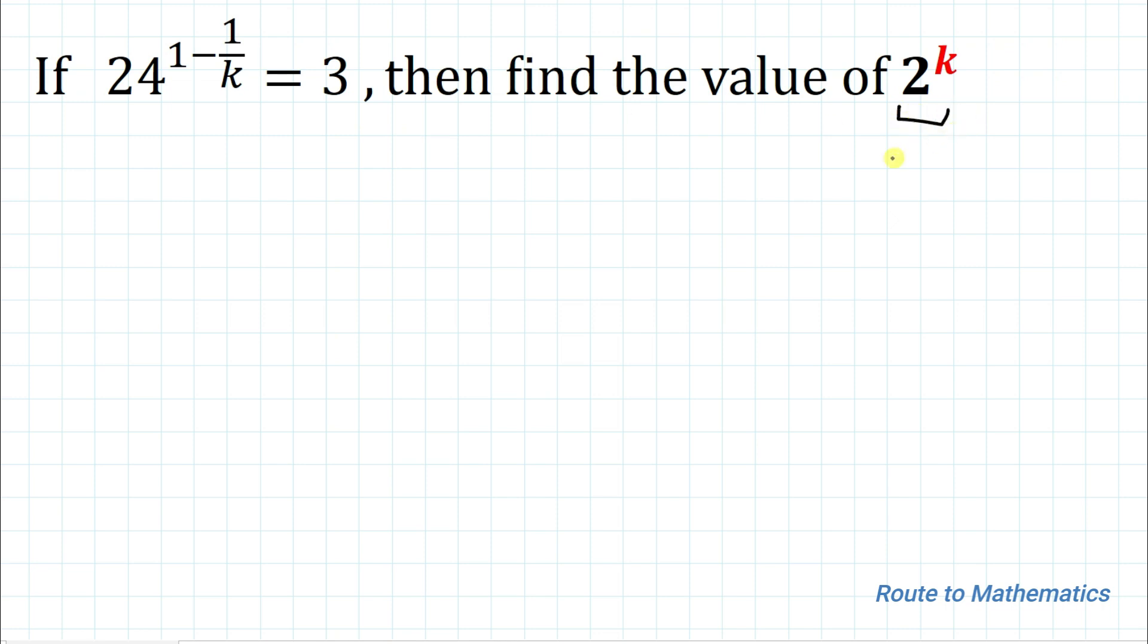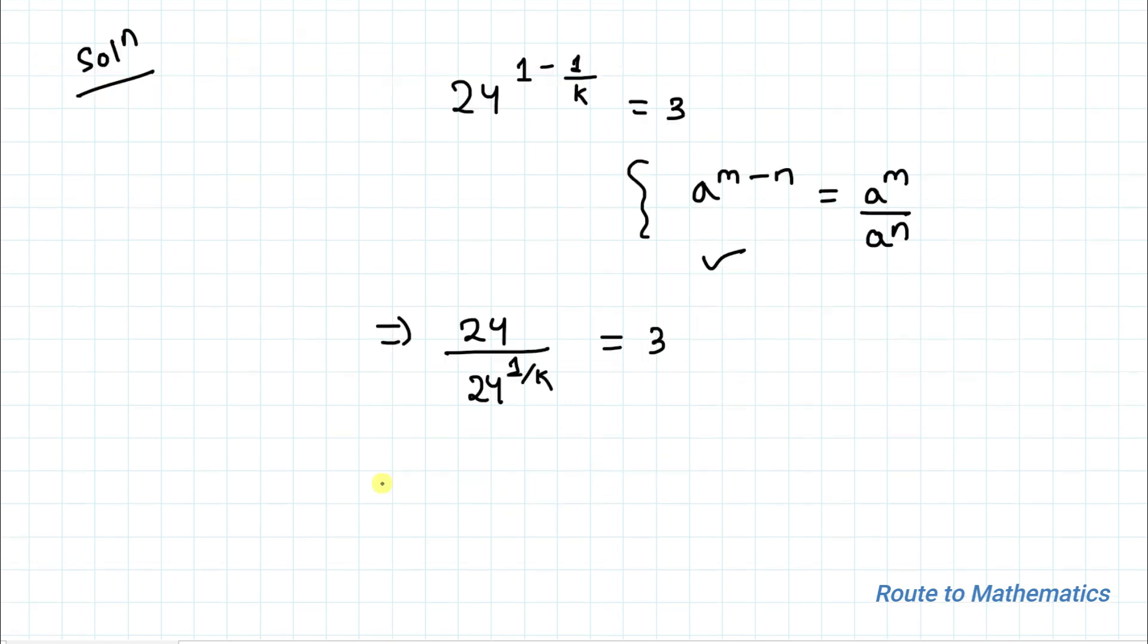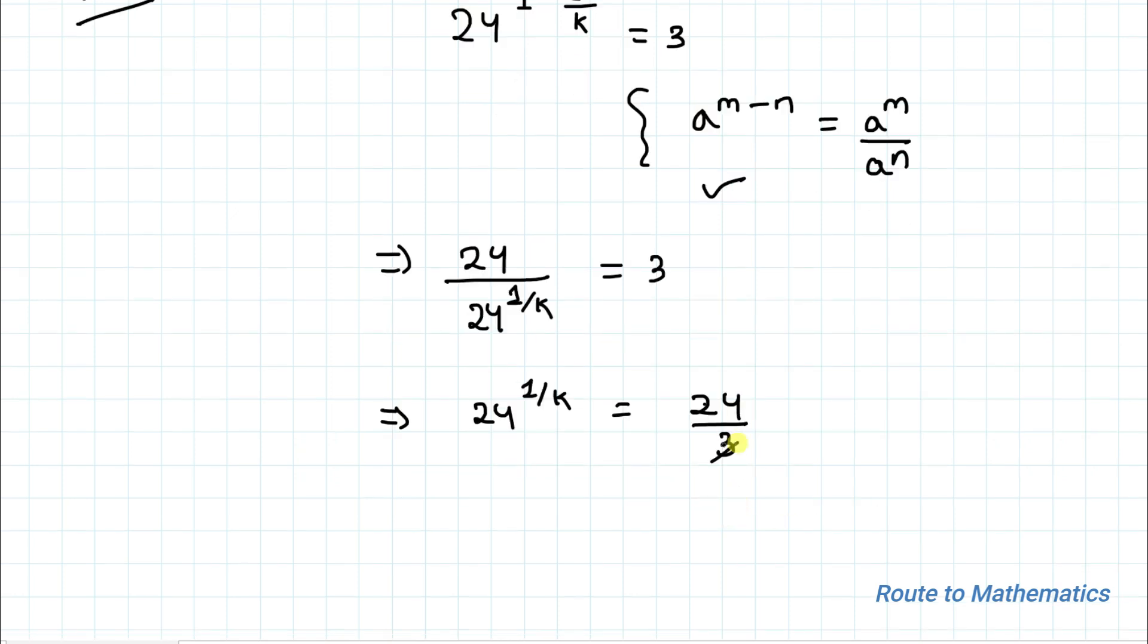Without any delay, let's start the solution. We have given 24 to the power 1 minus 1 by k equals to 3 as our exponential equation. We know an exponential rule that is a to the power m minus n equals to a to the power m divided by a to the power n. This is our exponential division rule. By using this rule, I can write 24 divided by 24 to the power 1 by k equals to 3. Now by cross multiplication, we have 24 to the power 1 by k equals to 24 divided by 3.